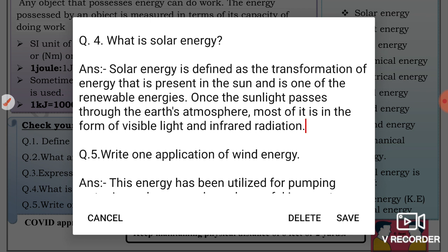Fourth question: What is solar energy? We can define solar energy as the transformation of energy that is present in the sun, which is one of the renewable energies. Once the sunlight passes through the Earth's atmosphere, most of it is in forms of visible light and infrared radiation.